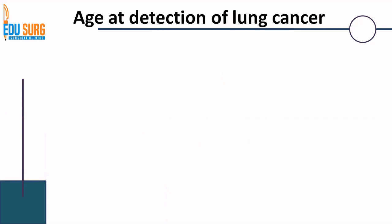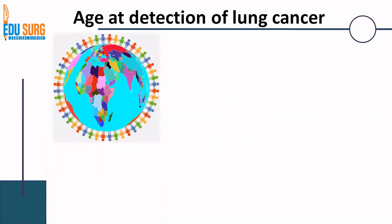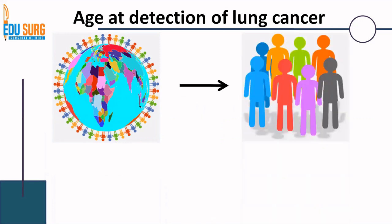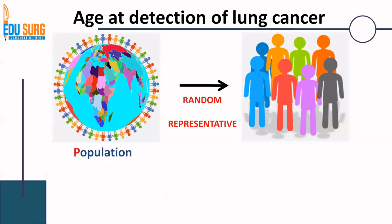Coming back to our example — age group at detection of lung cancer — suppose this is the entire world population, that is population data. What we have to do is find a sample which is randomly selected and representative of the population. The world population is divided into a random and representative sample. Understand that there can be multiple samples of the same population — the same population can be divided into multiple samples.